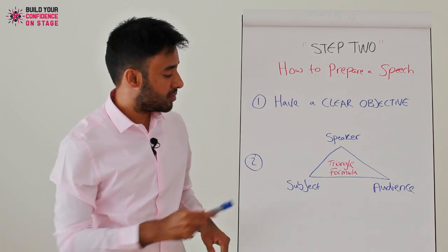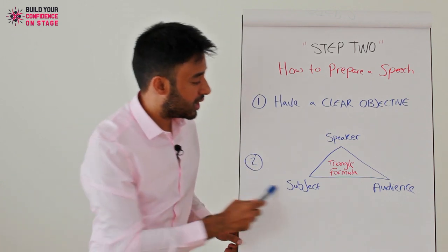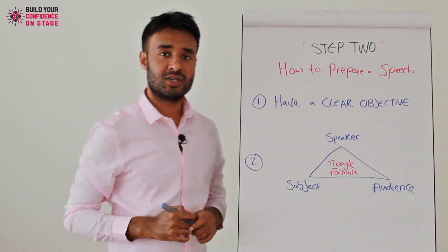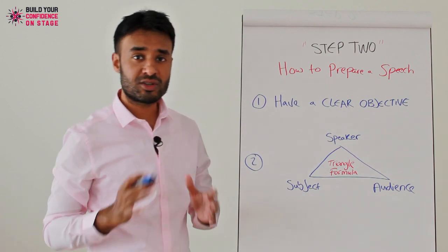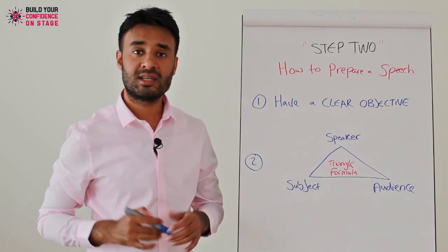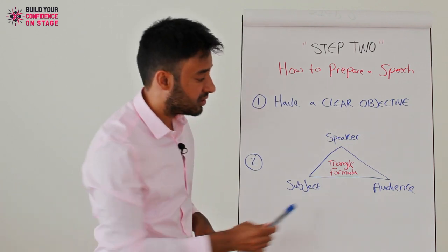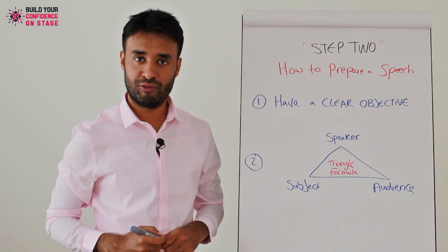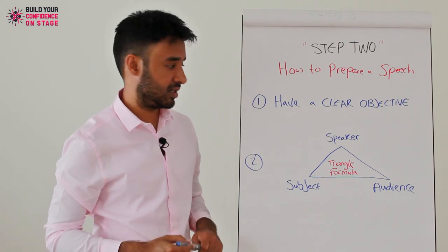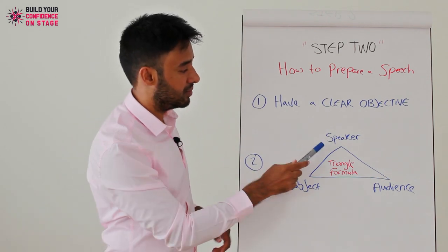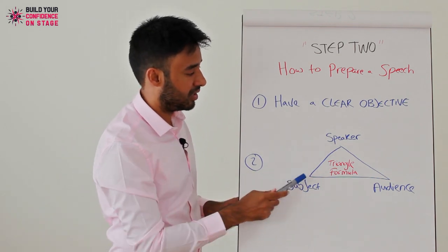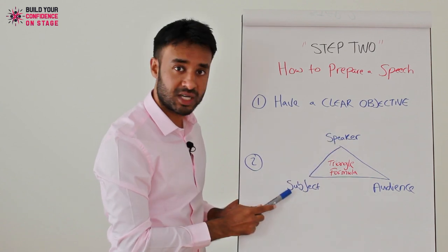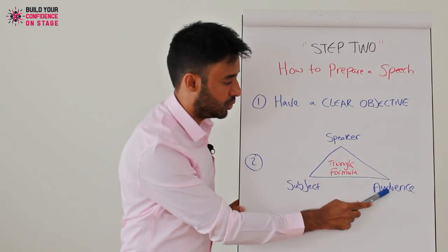Secondly, it's about what I call the triangle formula. This is where it gets interesting, because a lot of speakers end up winging it because they don't implement the triangle formula. There are three elements as part of the triangle formula: the speaker, the subject, and the audience.